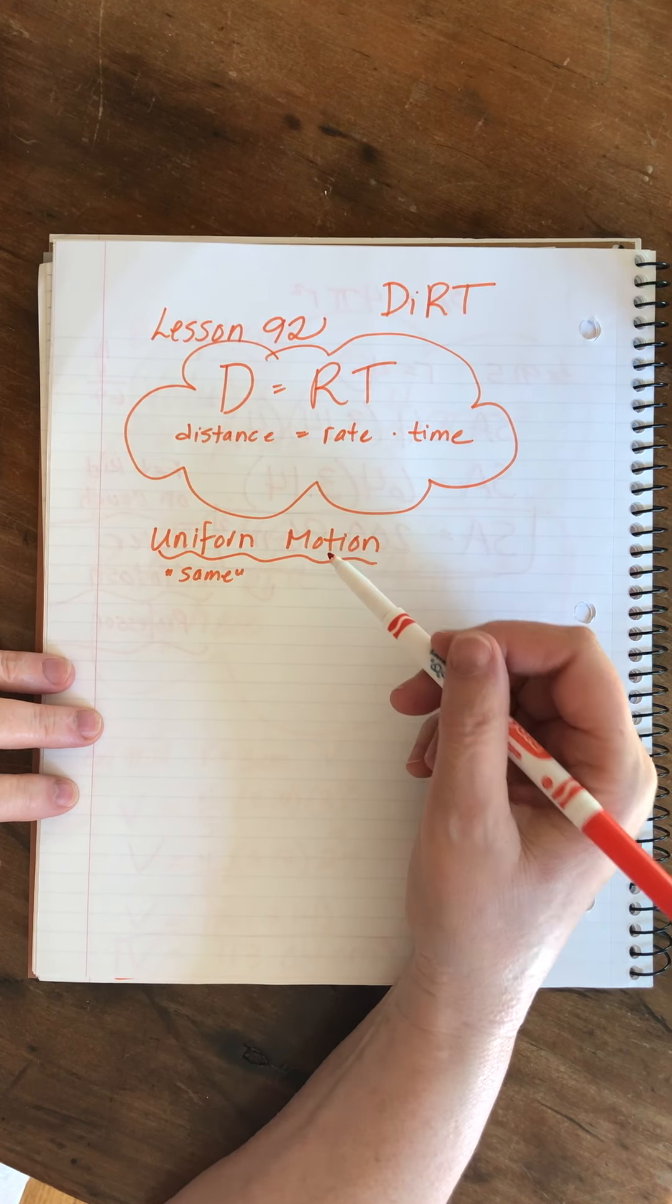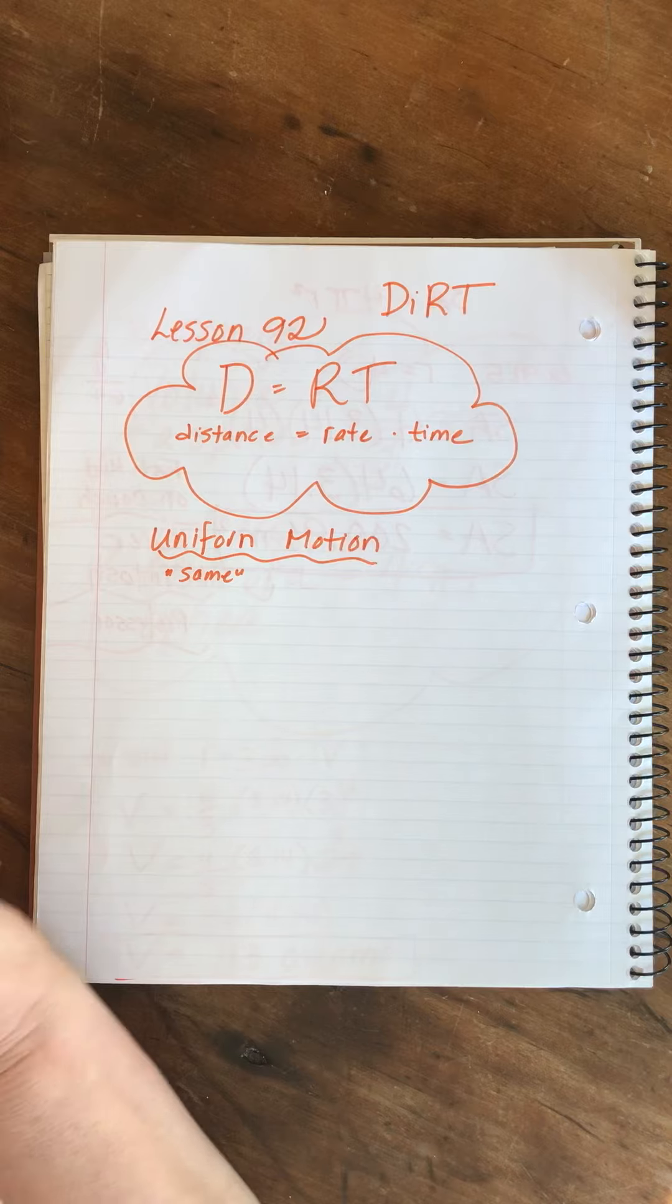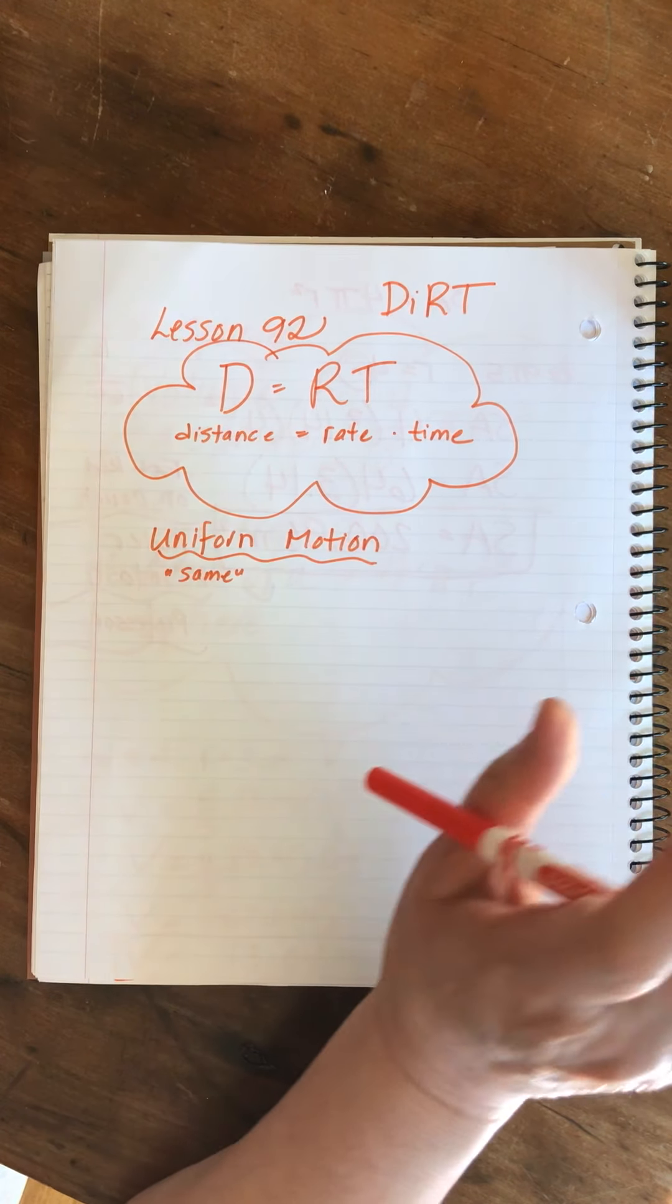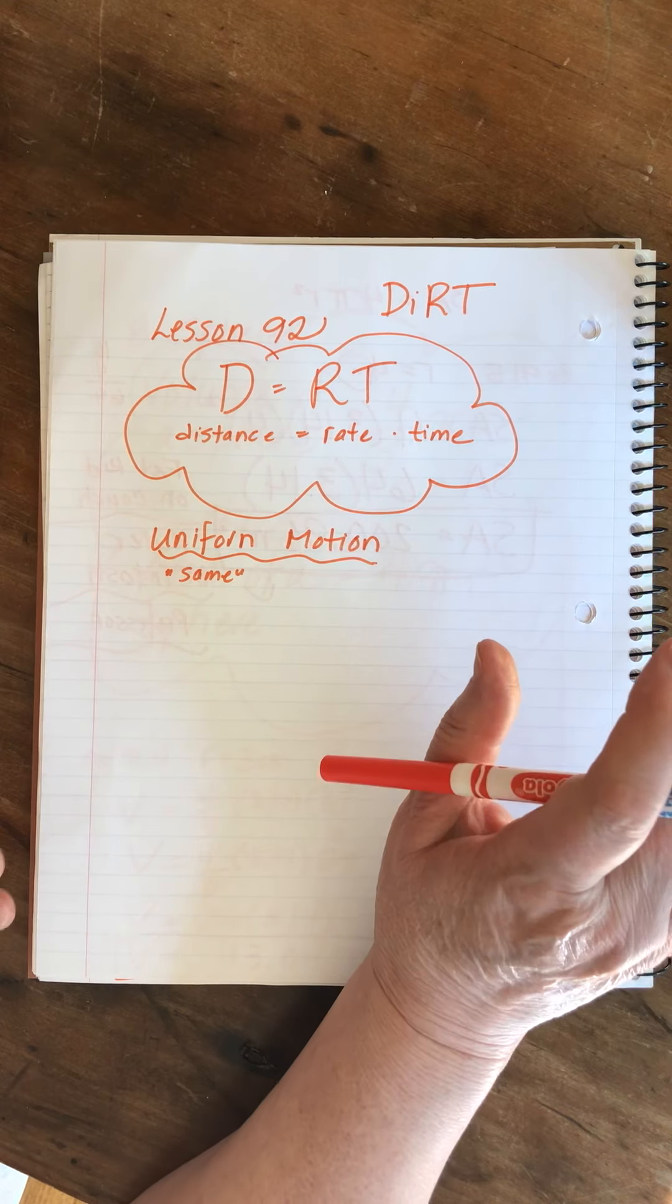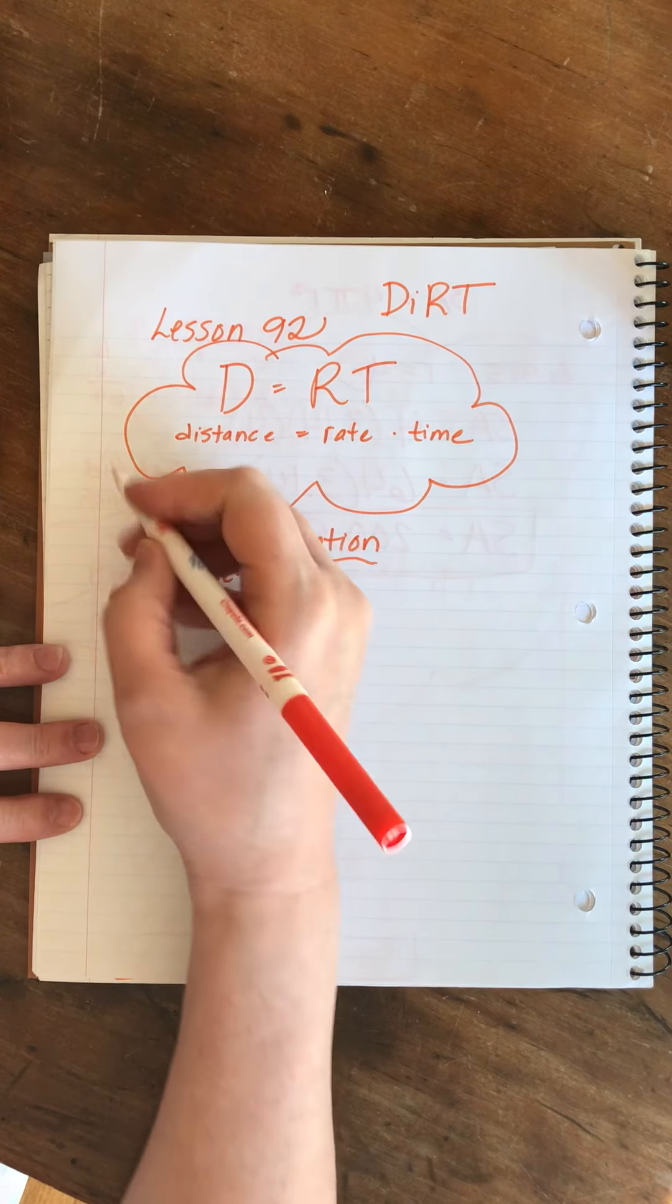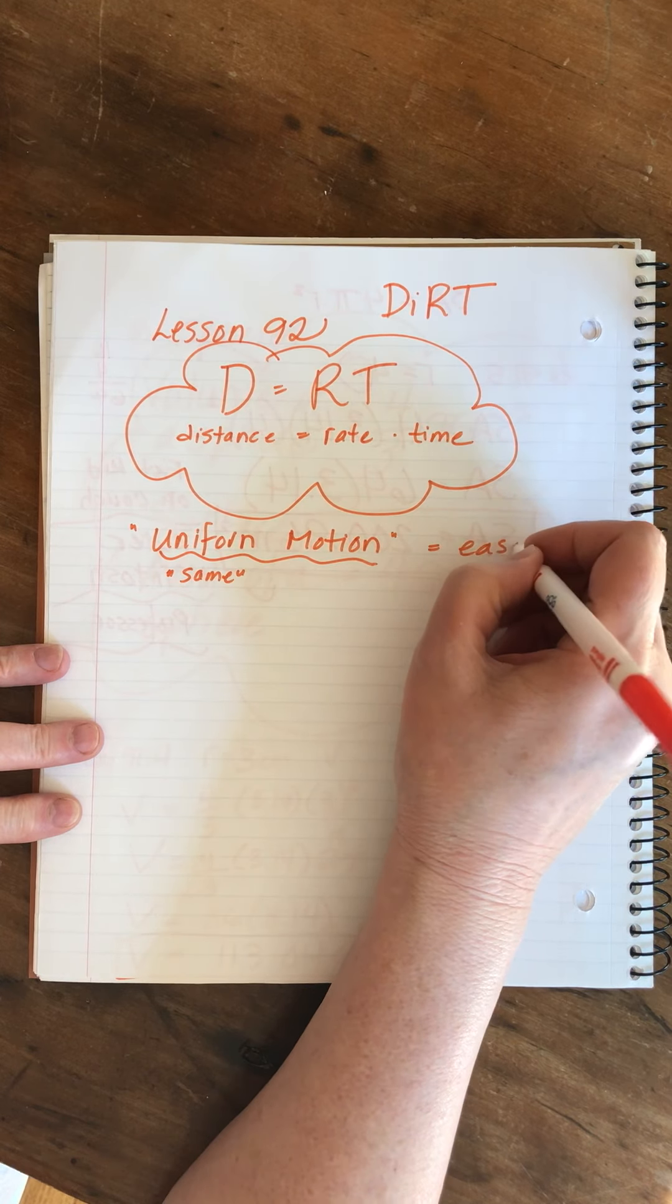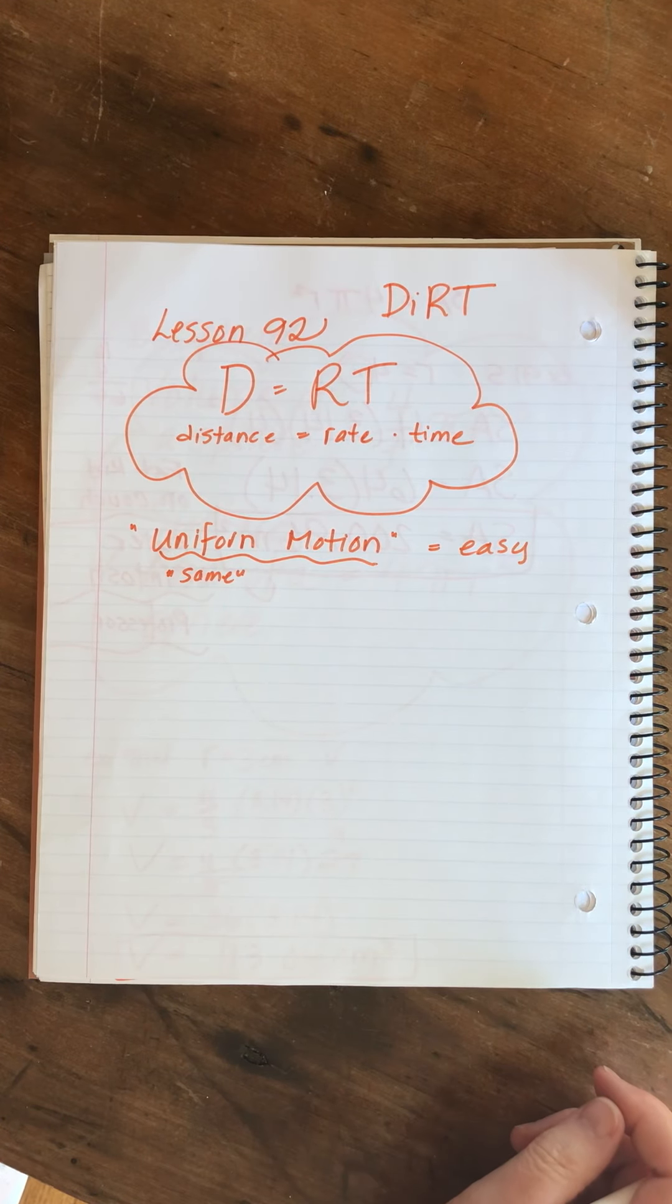So, we're assuming very unrealistically in these problems that we are always traveling at the same rate and that makes them much easier. When we start to talk about acceleration and deceleration, that moves us into the land of differential equations and calculus and physics. So, we're not ready to go there yet. So, we're making our problems a little bit simpler. So, whenever you see this phrase, uniform motion, just know that that means they're easier than they could be.